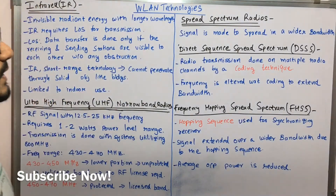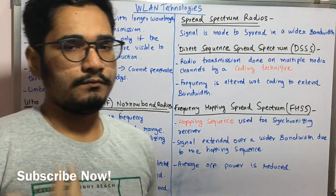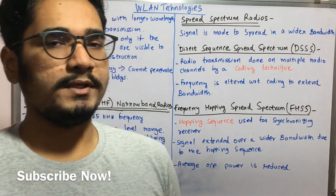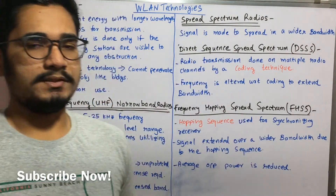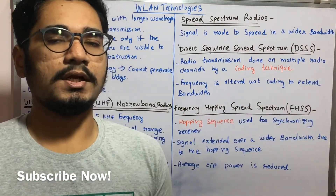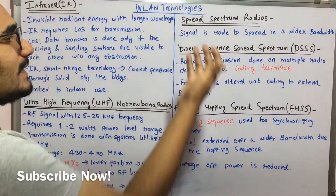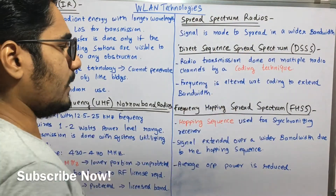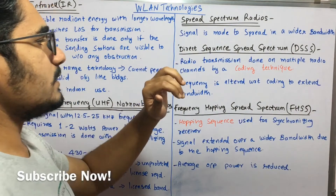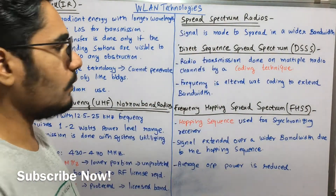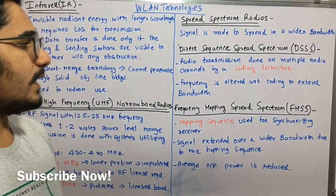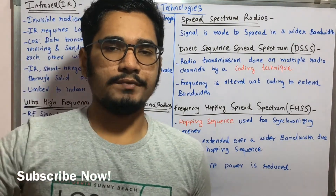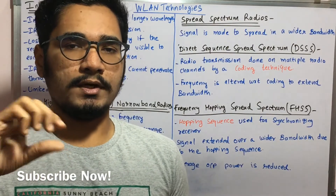The third type of technology is spread spectrum radio. Spread spectrum includes Direct Sequence Spread Spectrum (DSSS) and Frequency Hopping Spread Spectrum (FHSS). It is used to spread the incoming signal into a much larger area for a wider bandwidth. DSSS employs radio transmission on multiple radio channels using a coding or chipping sequence to transmit the signal over a much larger geographical area.